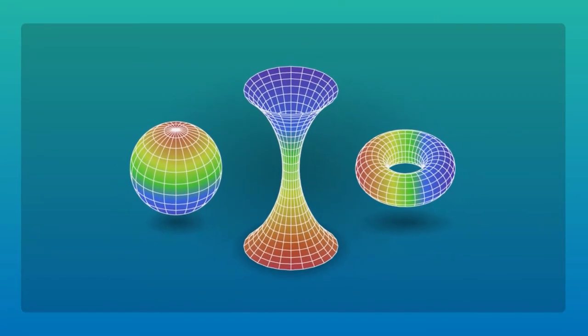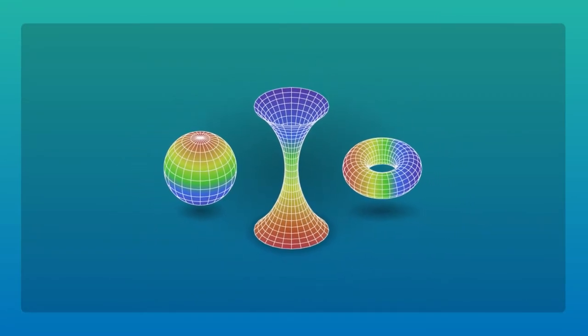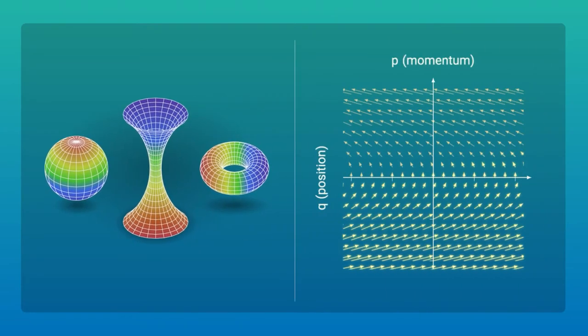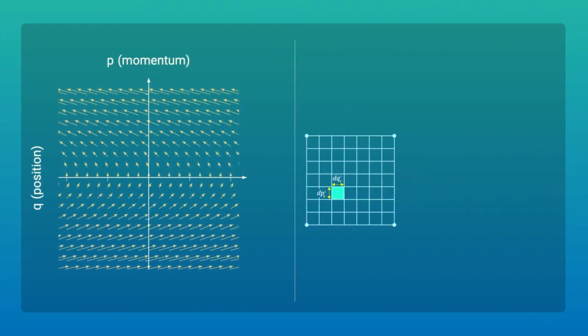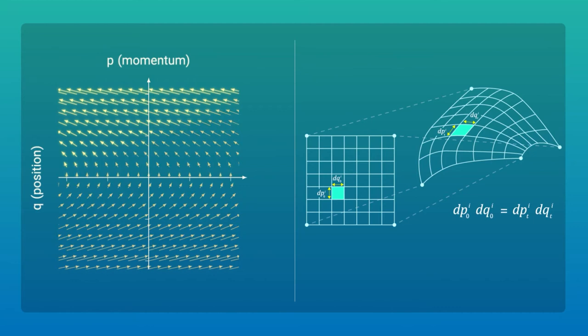From a geometrical perspective, these equations can be interpreted as the flow of a vector field in phase space, or the space of all possible states of the physical system, such that it always conserves the phase space volume representing the conservation of energy.